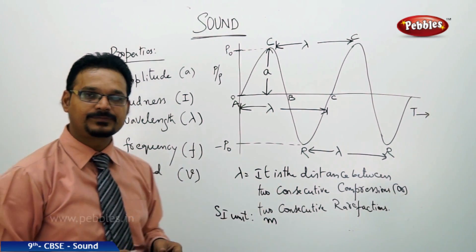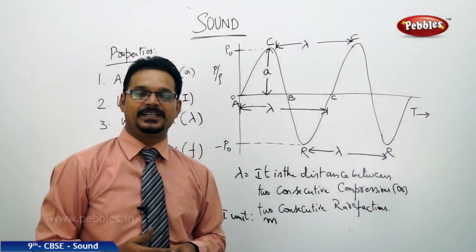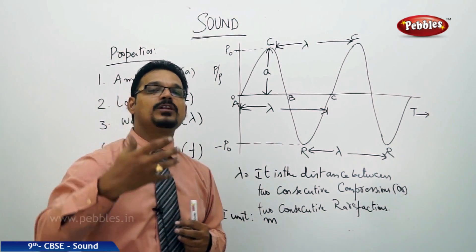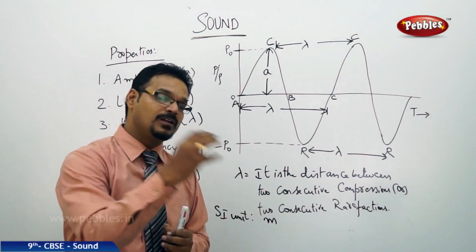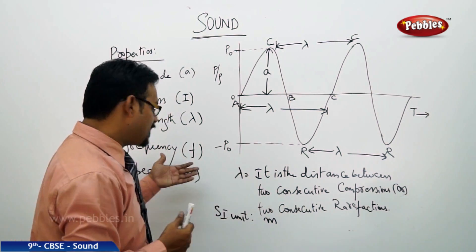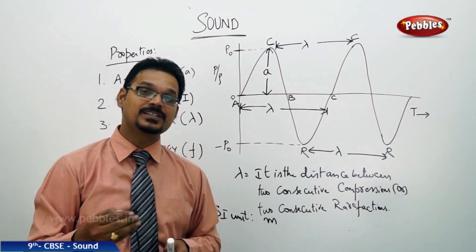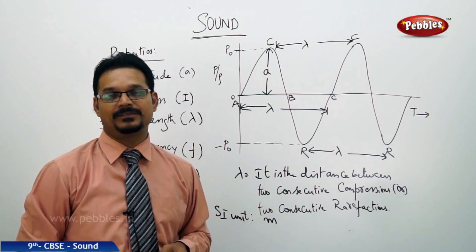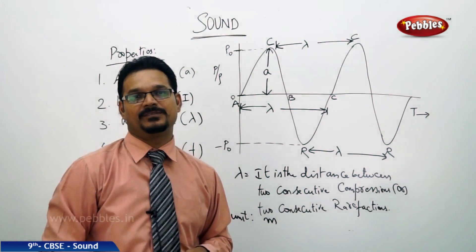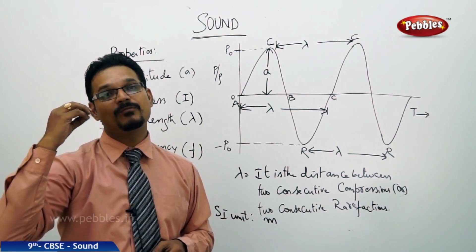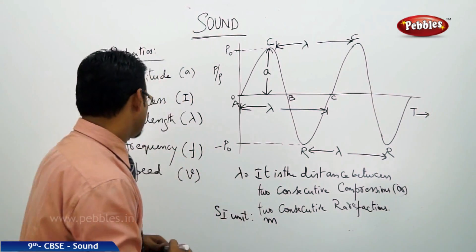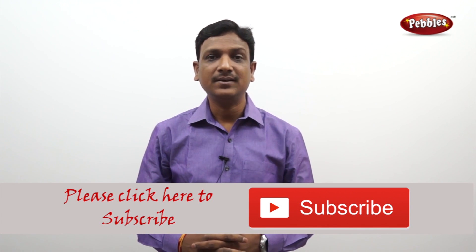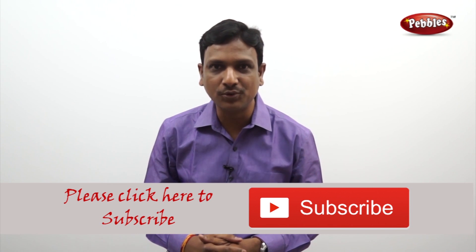The next property is frequency. Frequency tells the number of things done per unit of time — generally, the number of vibrations per second, oscillations per second, or rotations per second. Frequency is always expressed per second. If you like this video, please give a thumbs up and subscribe to our channel to get more videos on the CBSE syllabus.